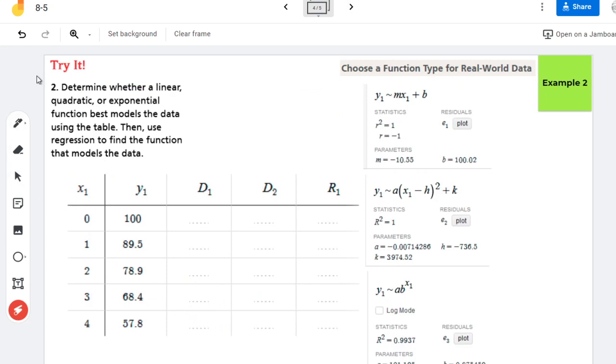So now for the Try It, they want us to pick which model would be best to use. And then we have these tables here, which came from doing regressions on Desmos. And we're picking which one's the best table. So let's start by finding our D1, which is our first difference.